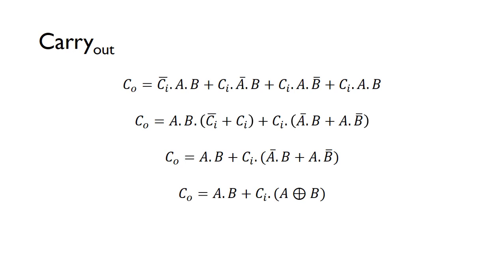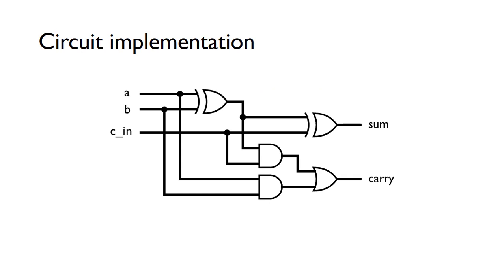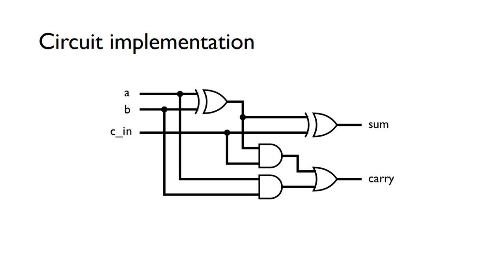That gives us the simplified expression for the carry-out. So we can now implement the full adder circuit: the sum is essentially a three-input XOR gate, and the carry-out is implemented using those required gates. This circuit takes three input bits and generates two output bits: the sum and the carry.